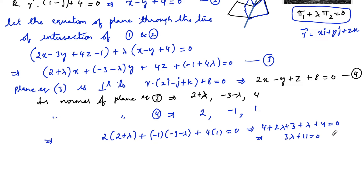We get 3λ + 11 = 0, which implies λ = -11/3. So λ = -11/3 is the constant value.